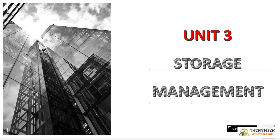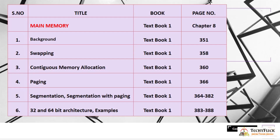Unit 3 is Storage Management, split into two subtopics. The first is Main Memory, Chapter 8 of Textbook 1. Topics include: Background at page 351, Swapping at page 358, Contiguous Memory Allocation at page 360, Paging at page 366, Segmentation and Segmentation with Paging at pages 364 to 382.